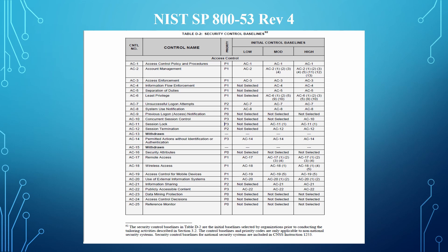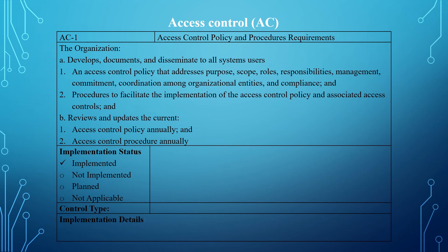We've used NIST 853 Rev4 to select the applicable security controls to secure the information system, and the next step is the implementation step. This table is an extract from an SSP template and falls under the minimum control section of the system security plan template. The BMS system was categorized as a moderate impact system, and AC1 — the control we'll be using for this video — falls under the moderate control set and was selected and documented in the system security plan.